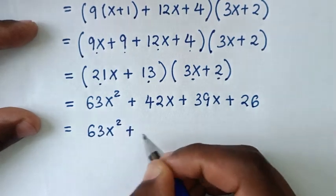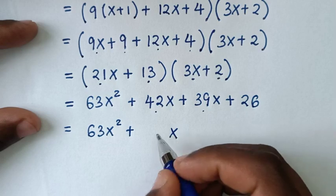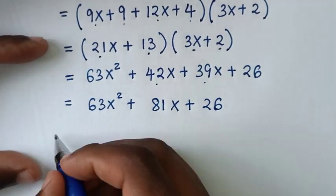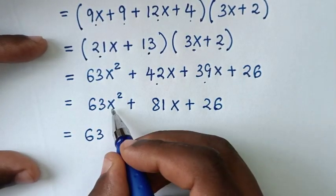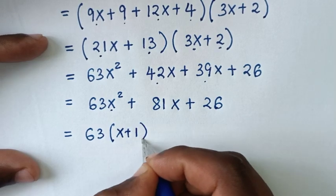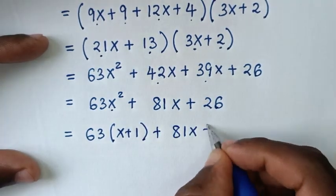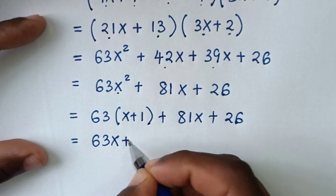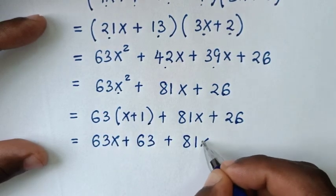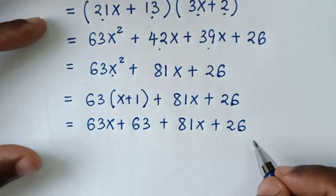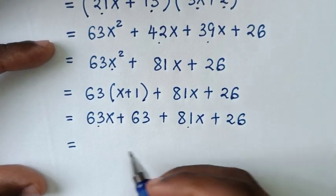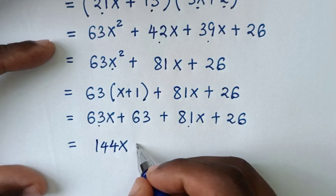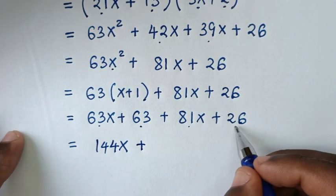Expanding (21x plus 13) times (3x plus 2): it will be 63x squared plus 42x plus 39x plus 26. Then substituting x squared equals x plus 1 for 63x squared gives 63(x plus 1), so it becomes 63x plus 63 plus 42x plus 39x plus 26, then collecting like terms: (63 plus 42 plus 39)x plus (63 plus 26).